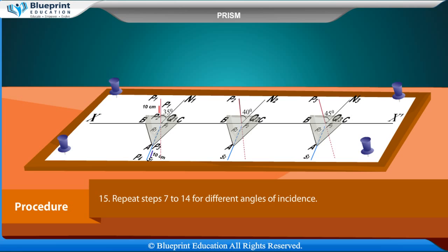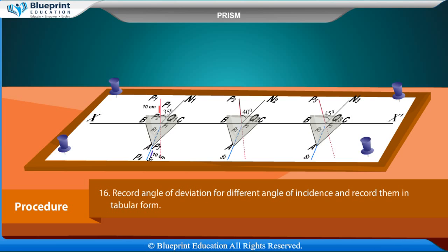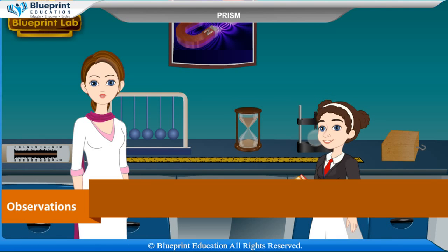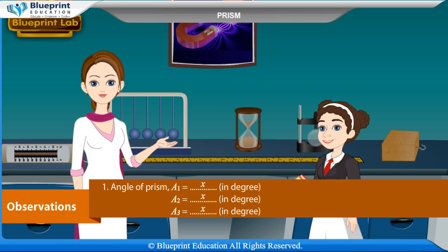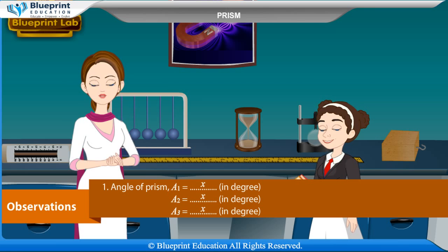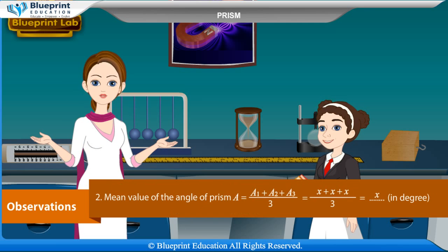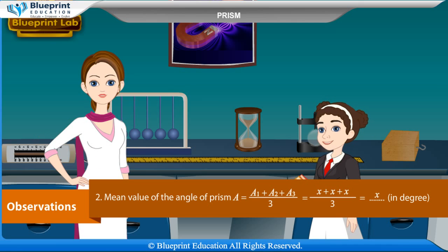Repeat steps 7 to 14 for different angles of incidence. Record the angle of deviation for each angle of incidence in tabular form. Measure the angle of prism A from the marked boundary of the prism. Observation: angle of prism A1, A2, and A3 are each measured in degrees.